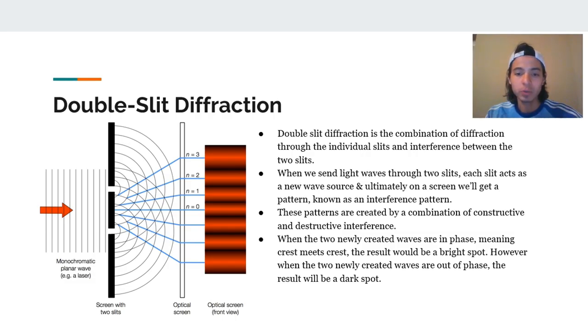When the two new waves created are in phase, meaning the crest meets the crest, the result will be a bright spot. As we can see here, when the two waves meet right here, right on the line, that's when it all meets at that one point, it creates a bright spot.